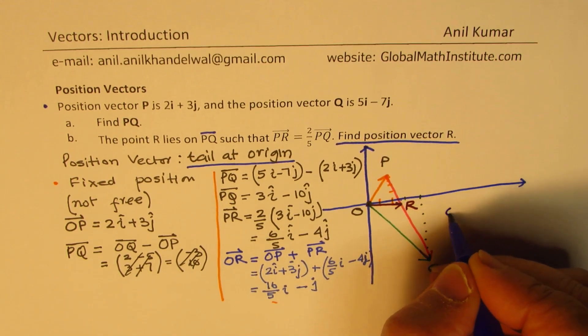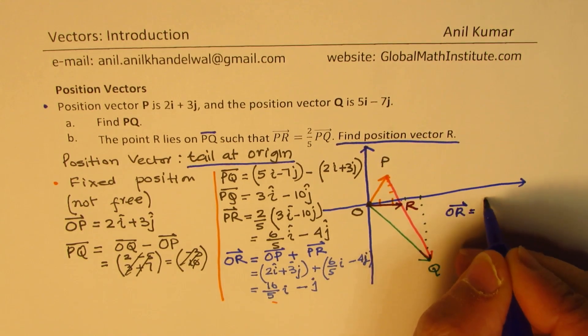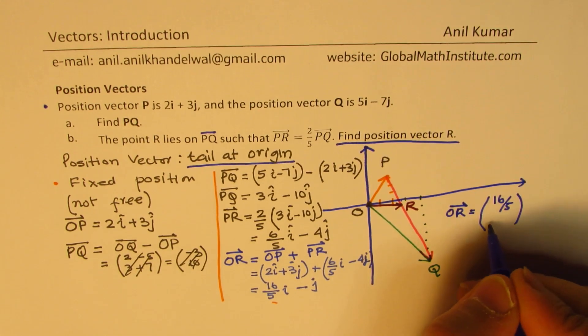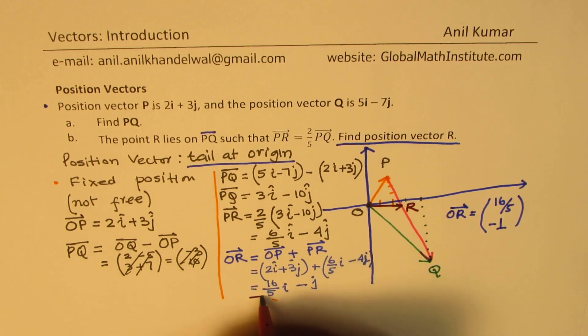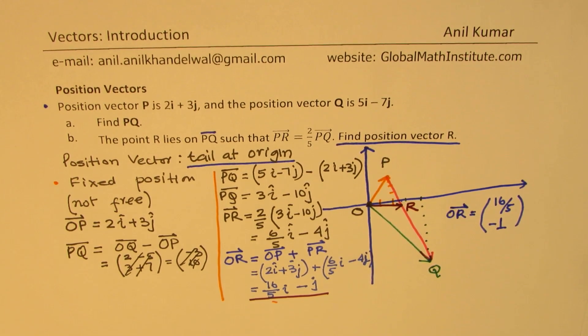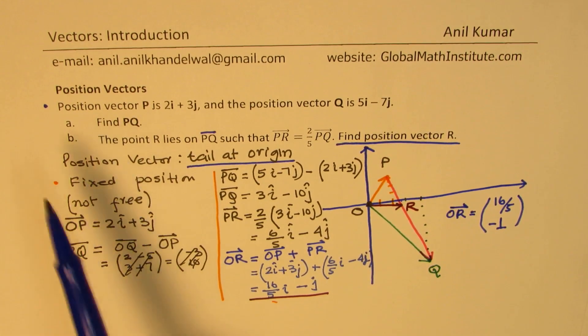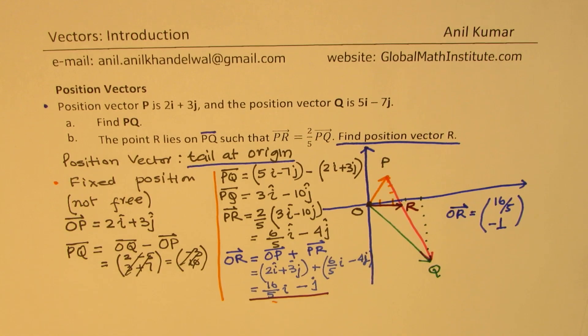So the position vector OR, which we just found, could also be written as 16 over 5 and minus 1. Is that clear to you? So that is how we find the position vector OR, which divides the vector PQ in the ratio of 2 to 5. Perfect. So this is a very good example which makes you understand what is a position vector. Position vectors are fixed with tail at the origin.